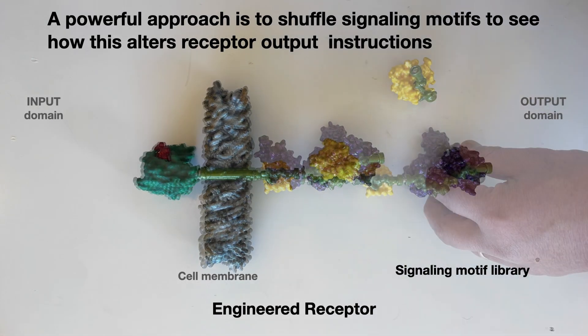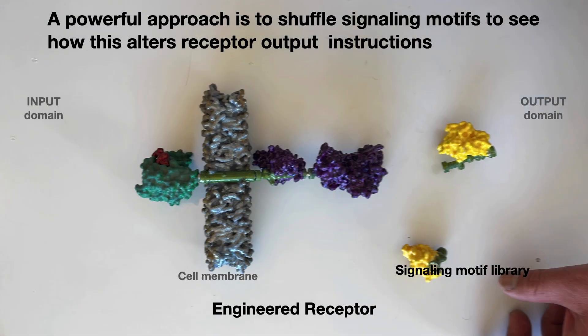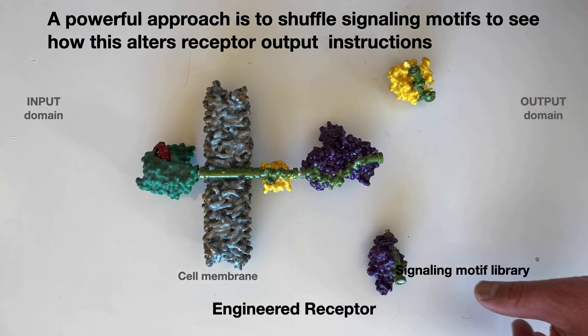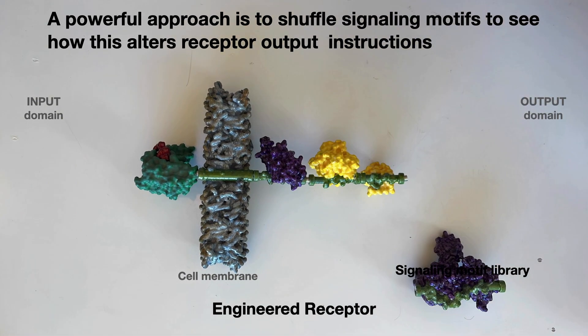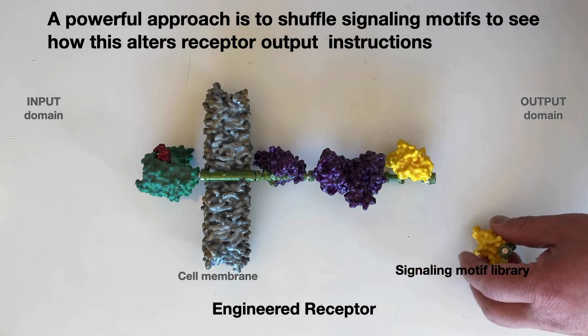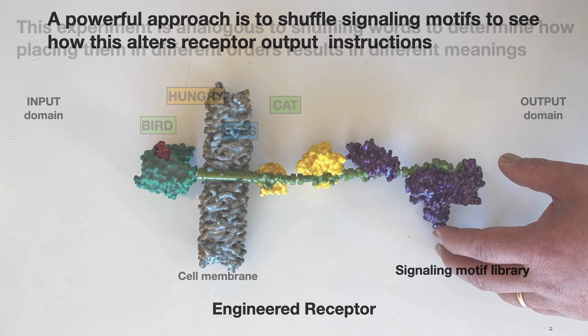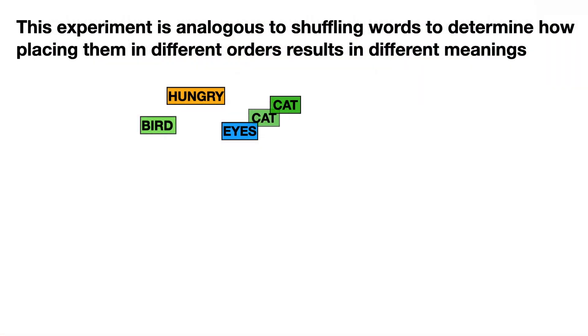A powerful approach is to shuffle signaling motifs to see how this alters receptor output instructions. This experiment is analogous to shuffling words to determine how placing them in different orders results in different meanings.